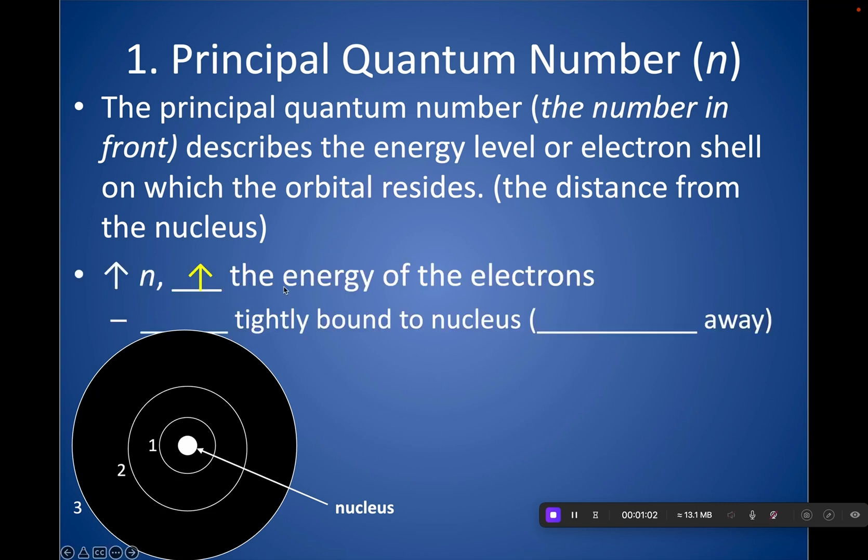And remember, the higher the n, the further you are from the nucleus, the less tightly bound that electron is, and the easier it will be to be removed because you're not feeling as much of the force of those protons pulling it in as you would if you were closer.